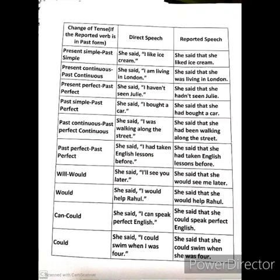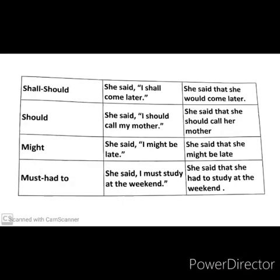Now, some auxiliaries and how they change when the reporting verb is in past: 'will' becomes 'would', 'would' remains 'would', 'can' becomes 'could', 'could' remains 'could', 'shall' becomes 'should', 'should' remains 'should', 'might' remains 'might', 'must' becomes 'had to'. Children make mistakes with 'must' — they do not change it in indirect or reported speech. In reported speech we do not change the main verb; we change the auxiliary into its past form. This is very important.